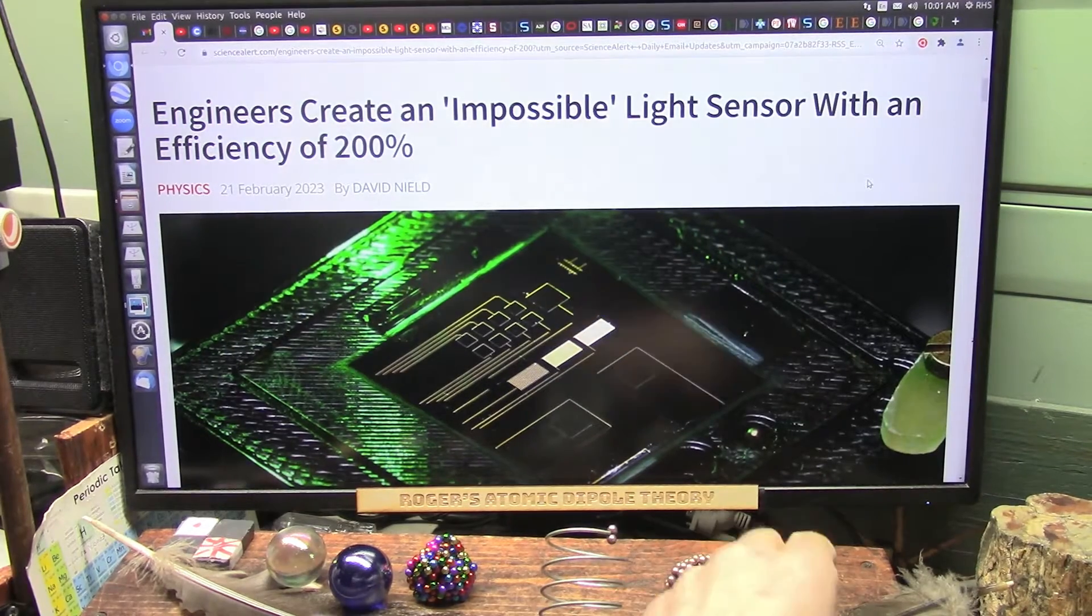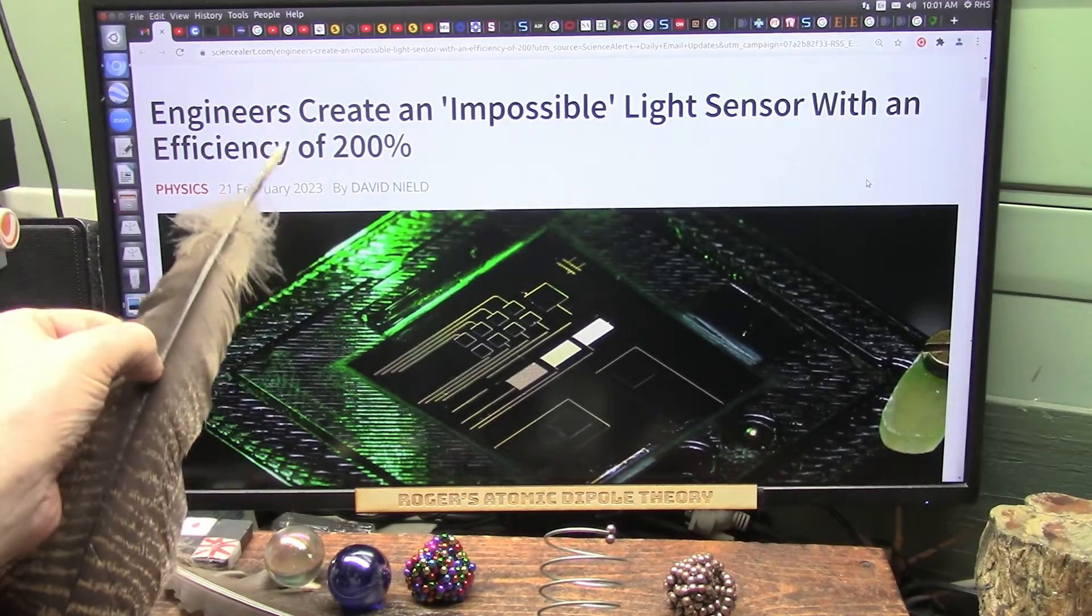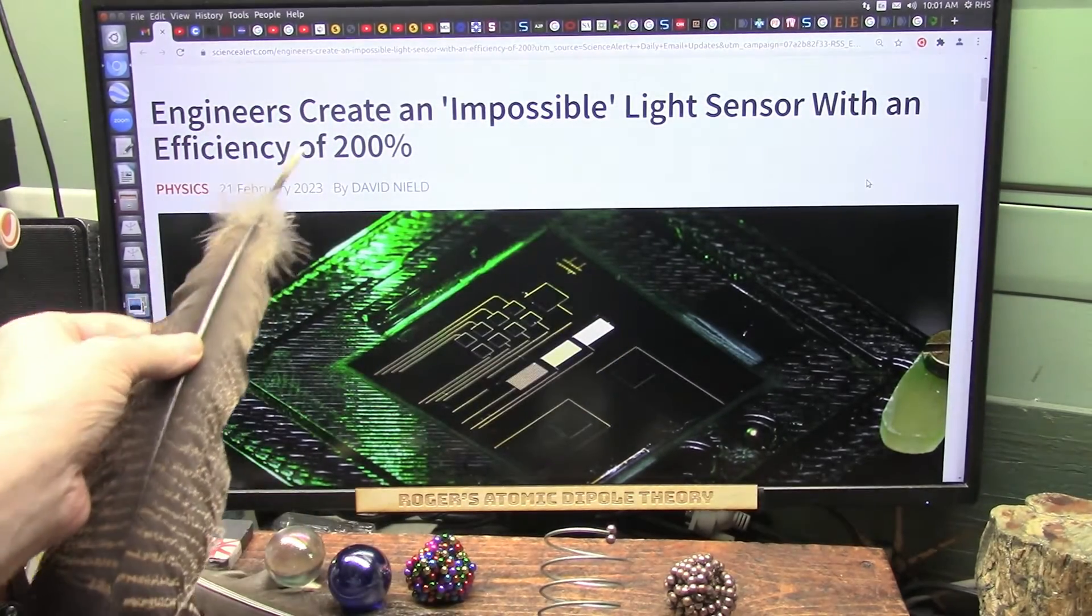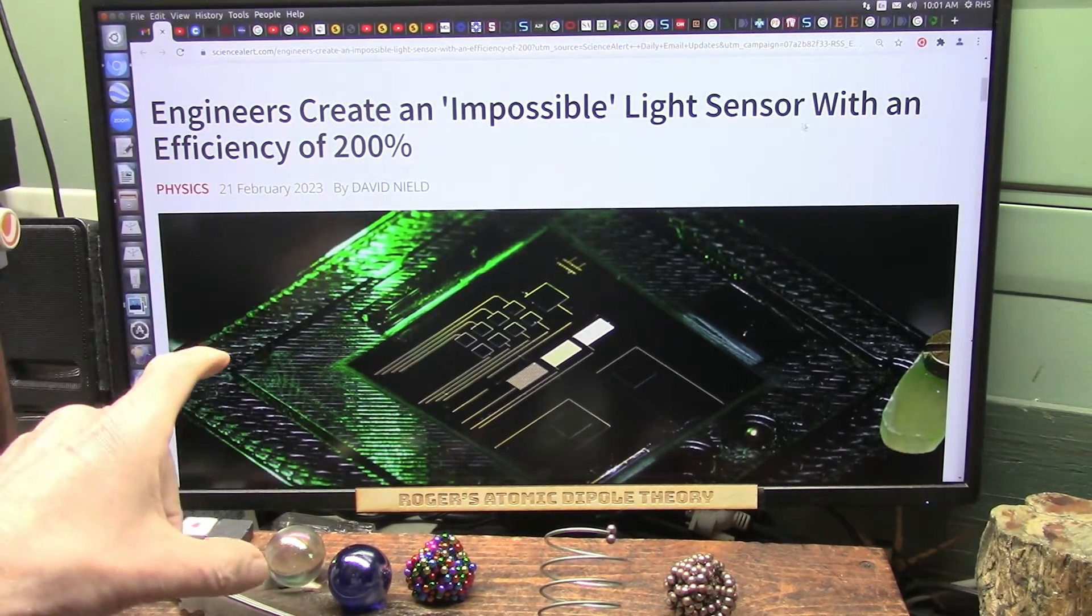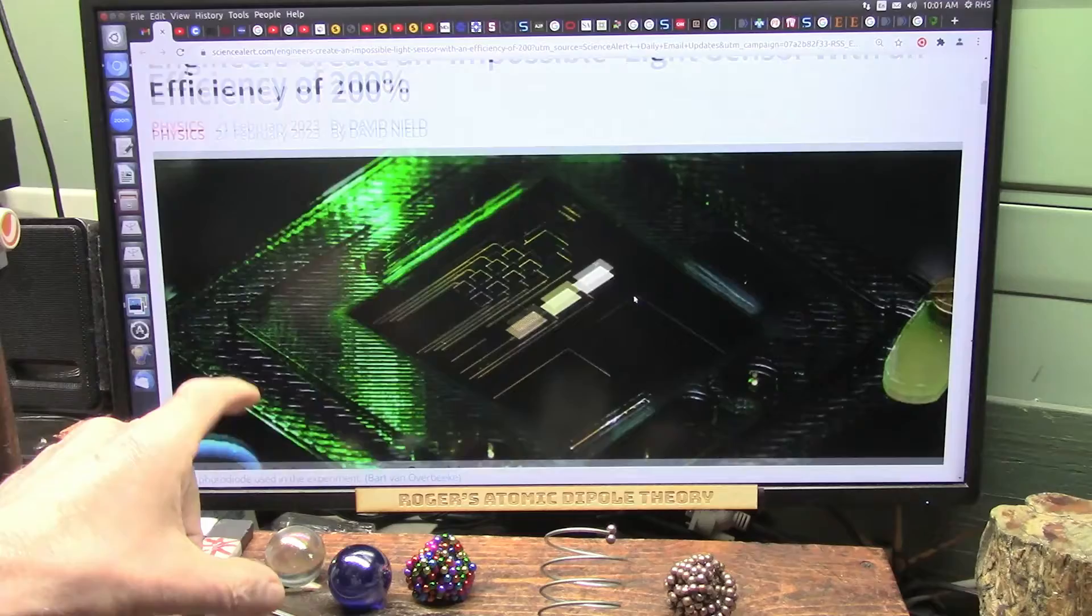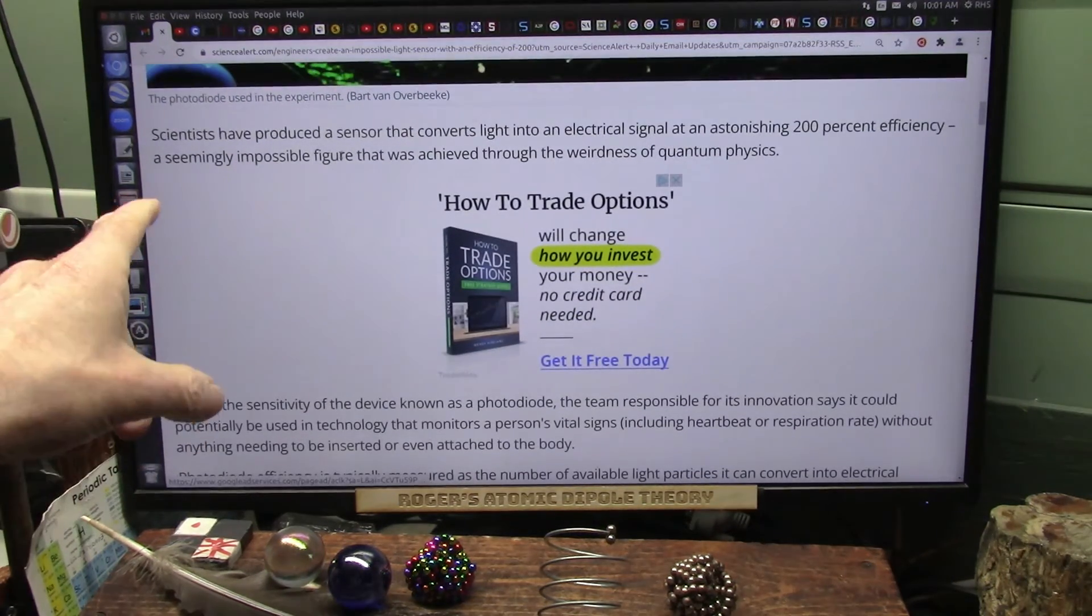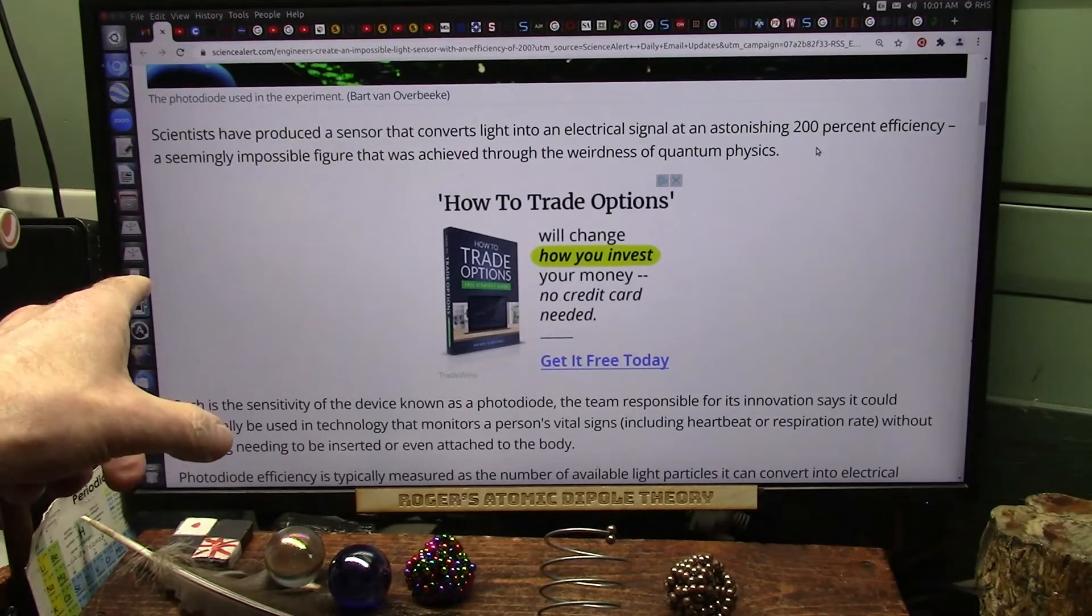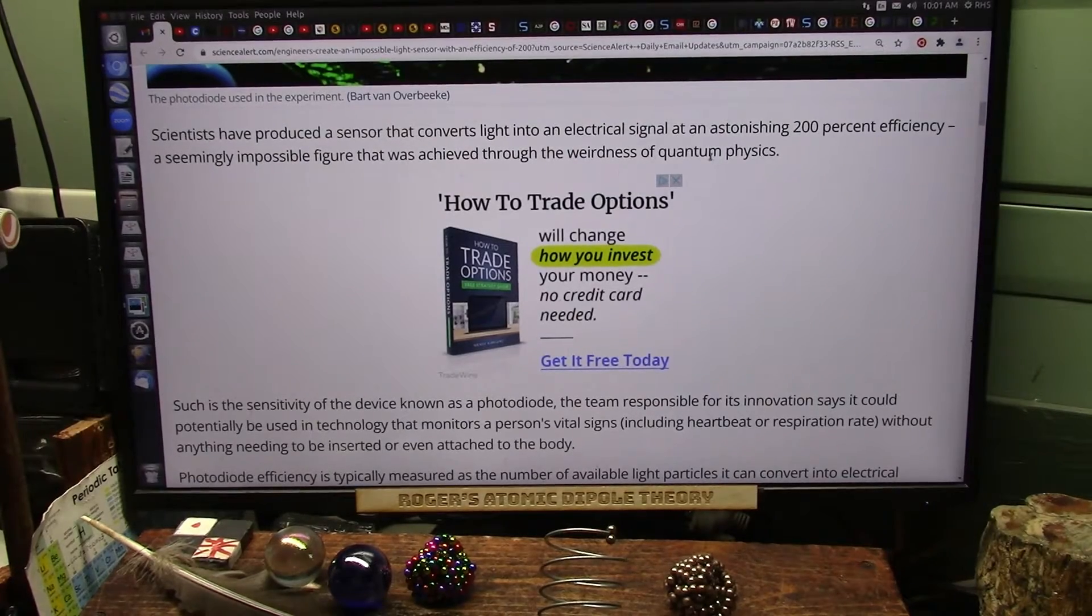Okay my friends, they finally did it. They proved exactly what I was talking about. They created an impossible light sensor with an efficiency of 200%. Now they're using transition metals and pulsed lasers. They produced a sensor that gets an astonishing 200% efficiency, which basically seems impossible, but it's because of quantum physics.